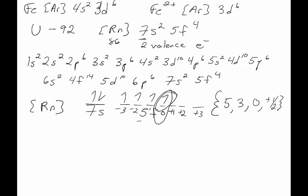What if I asked you to describe this electron in uranium? What are the quantum numbers? It's in the seventh shell in an s orbital, which has only one possible value for m sub l. There is only one s orbital, and it has spin down.